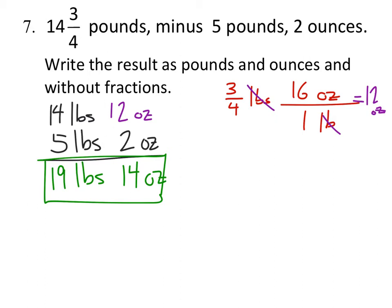Actually, that was subtraction, not addition — so let's subtract instead. 14 minus 5 is 9, and 12 minus 2 is 10 ounces. So the answer is 9 pounds and 10 ounces.